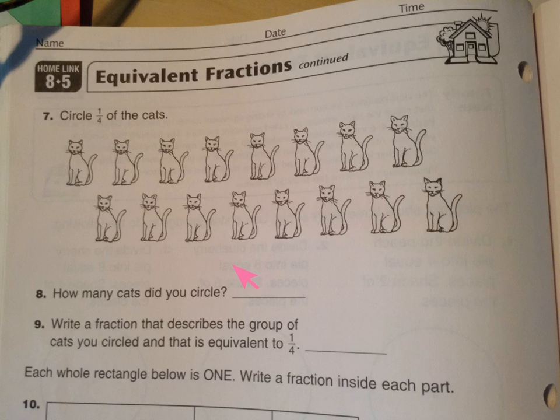Then write how many did you circle. And then write the fraction here. That's the equivalent. And to give you a quick hint for that, your fraction here, the bottom number or denominator is going to be the total number of cats. And this number here is going to be the number of cats that you circled.